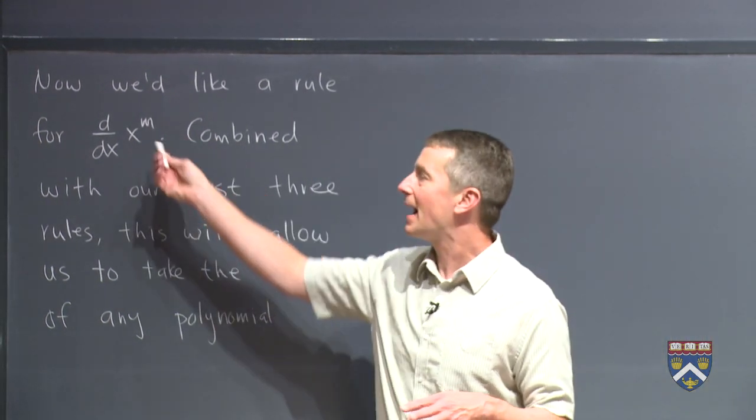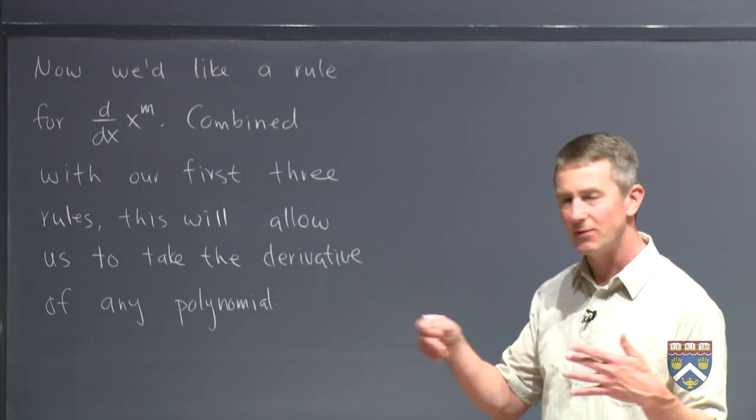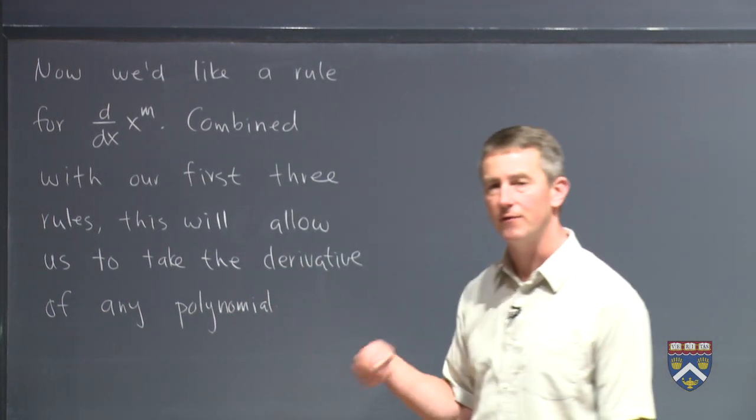that means that I can combine powers of x, x squared, x to the seventh, x to the 23rd, combine them and add them together. And that will allow us to take the derivative of any polynomial.